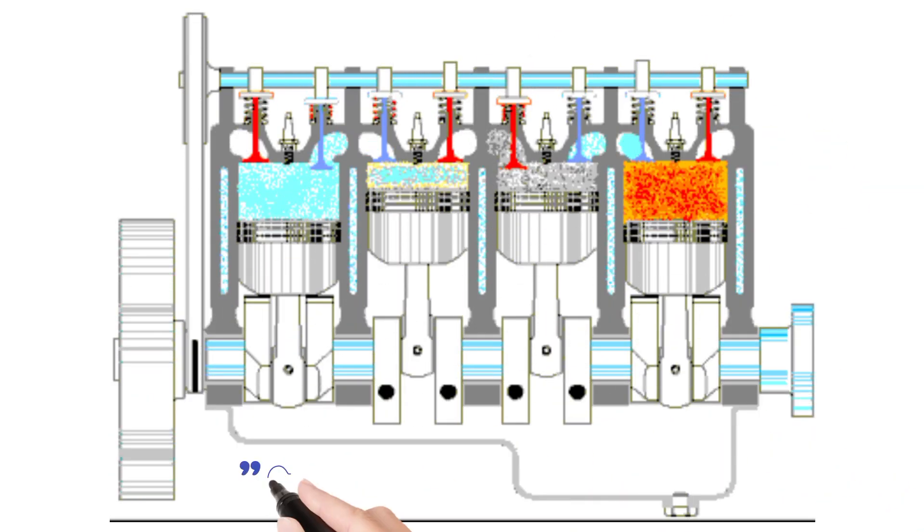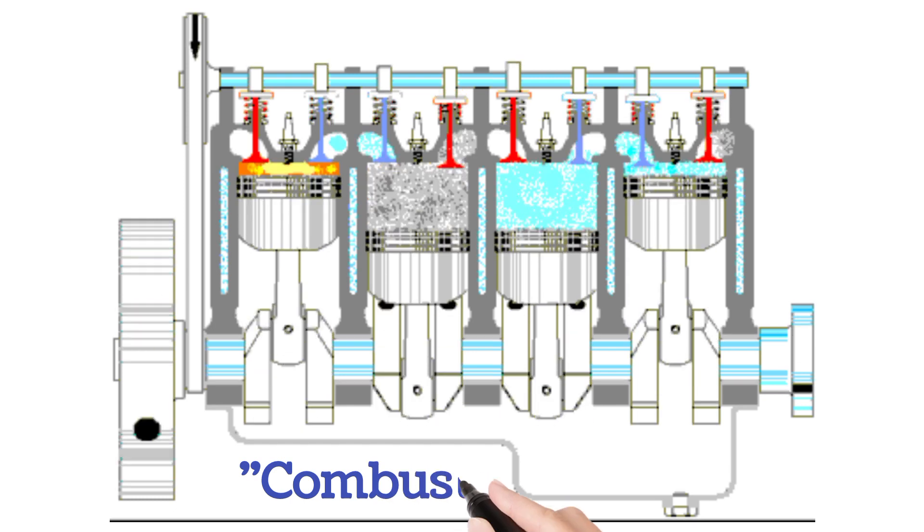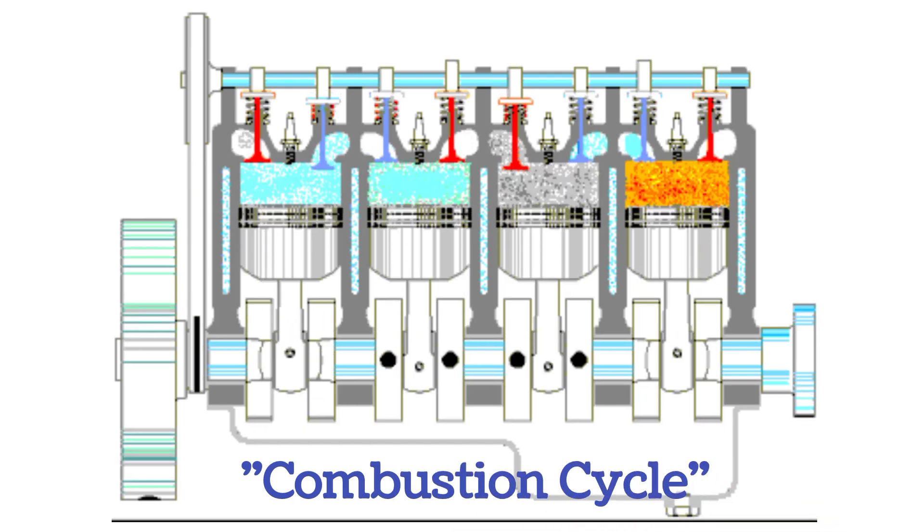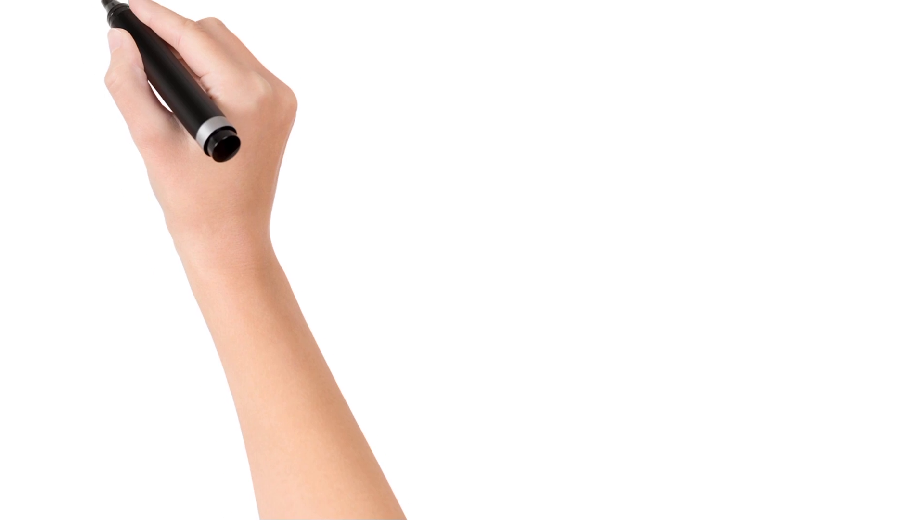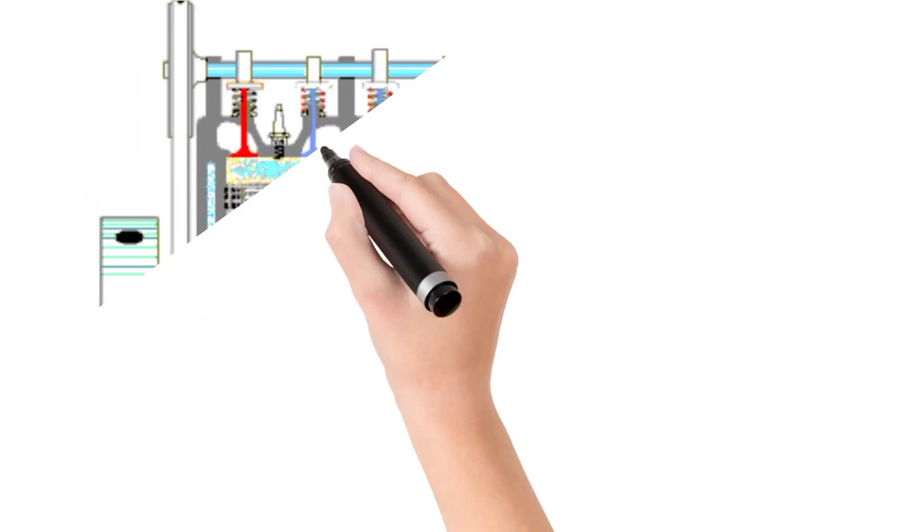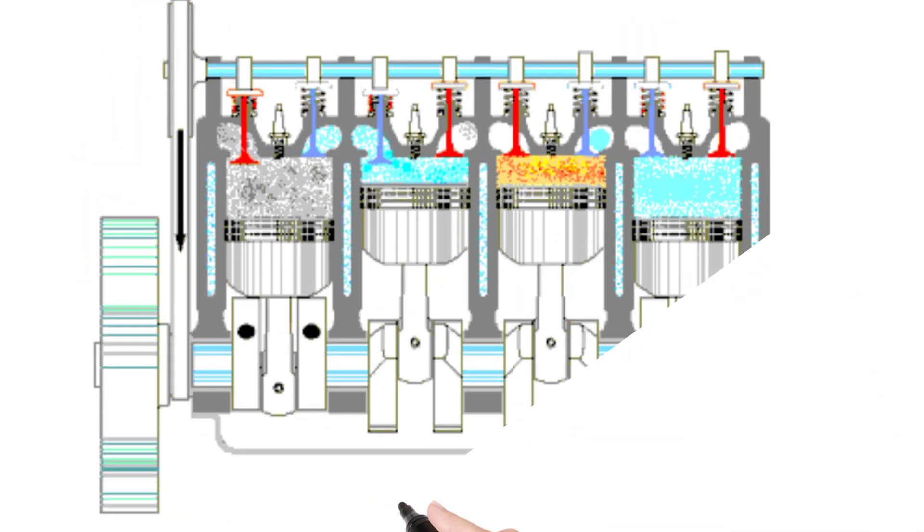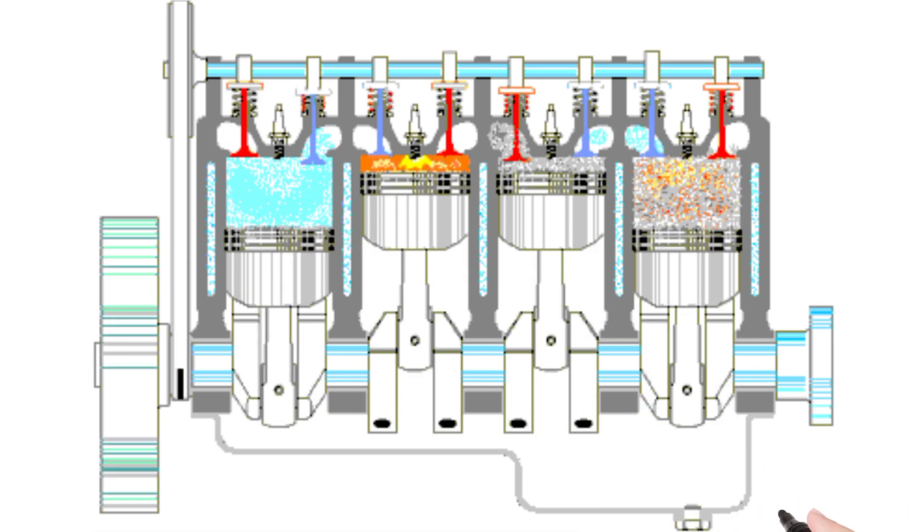This process is called the combustion cycle, and the process repeats thousands of times per minute to propel the car. A combustion cycle has four strokes, or steps. Hence, modern-day engines are also called four-stroke engines.